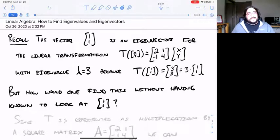So recall from our previous video, the vector that was the eigenvector for the linear transformation T(xy) equals the matrix [2,1;-1,4] times xy. It's a linear transformation represented by matrix multiplication.